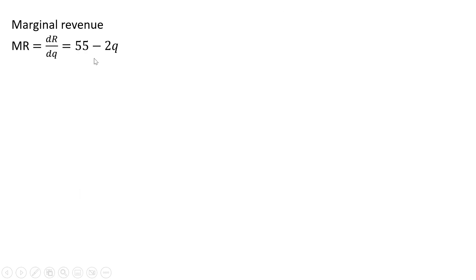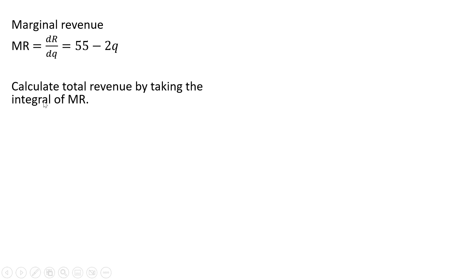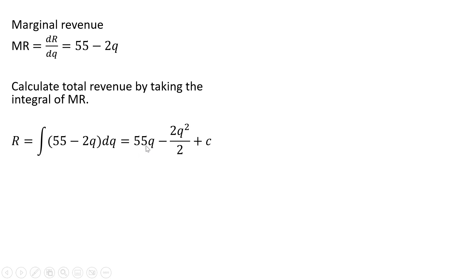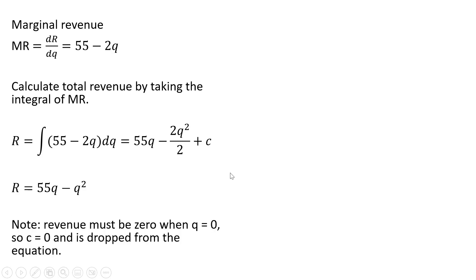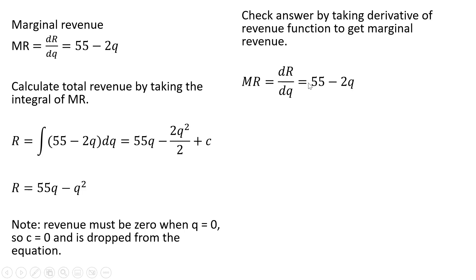Another example: marginal revenue equals 55 minus 2q. We're going to calculate total revenue by taking the integral of marginal revenue. The integral of 55 is 55q — just the constant rule — and minus 2q will become minus 2q squared divided by 2. Drop the constant. We can check our math by taking the derivative of the revenue equation and we get back marginal revenue, so we did our integral right.